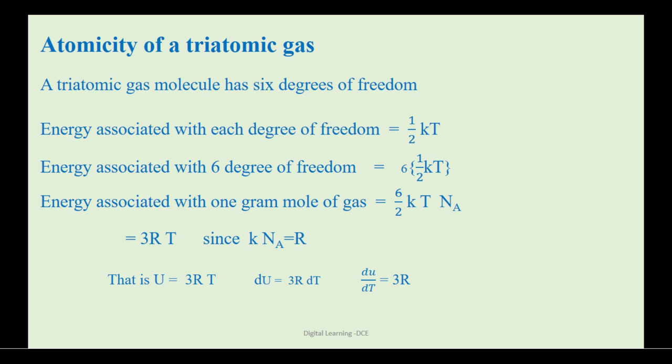It is represented by the letter U, that is equal to 3RT. By differentiating this with respect to T, we get du is equal to 3R into dT. By rearranging the terms, we get du by dT is equal to 3R.